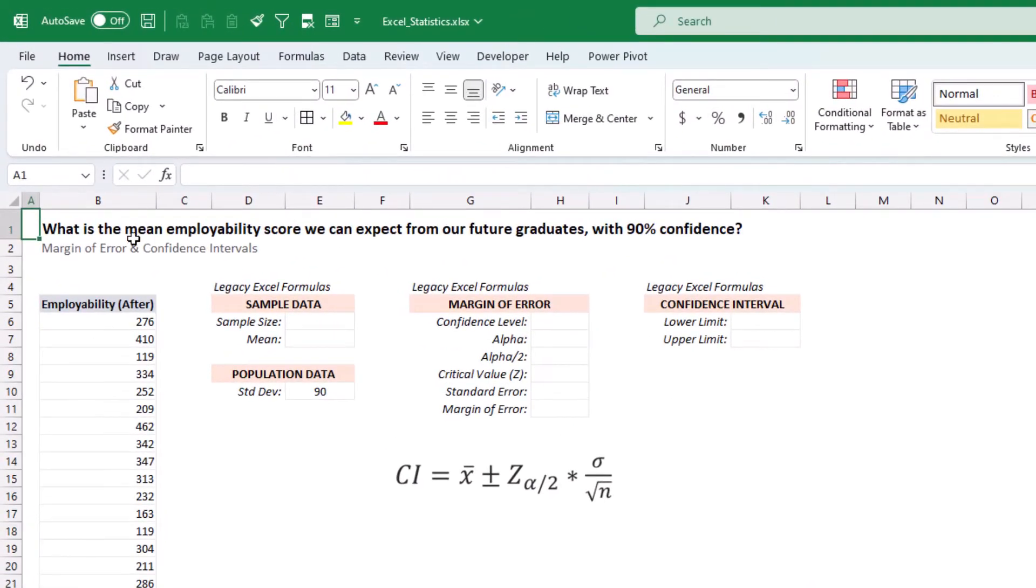And what we want to know is what is the mean employability score that we can expect from our future graduates with a 90% confidence level. Now, in this case, we'll be assuming that we know the standard deviation of the population, which is 90. So let's go ahead and find the confidence interval.